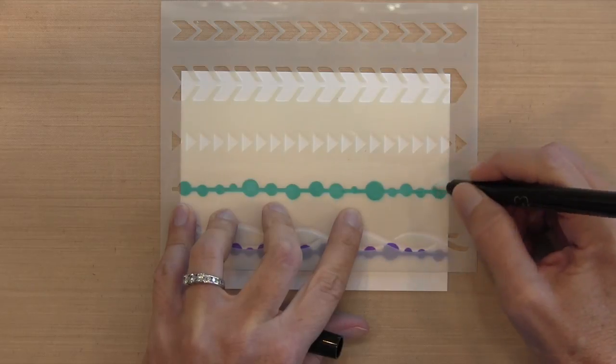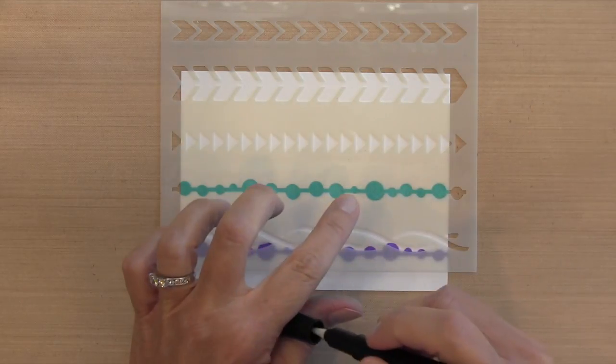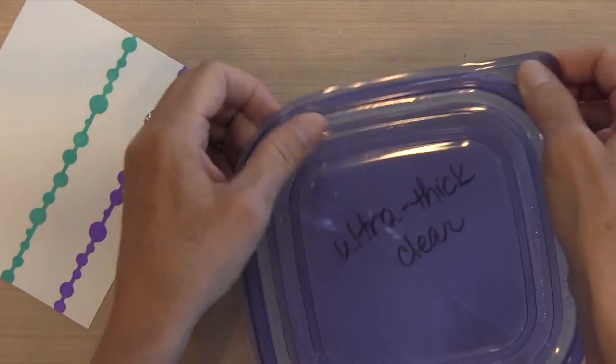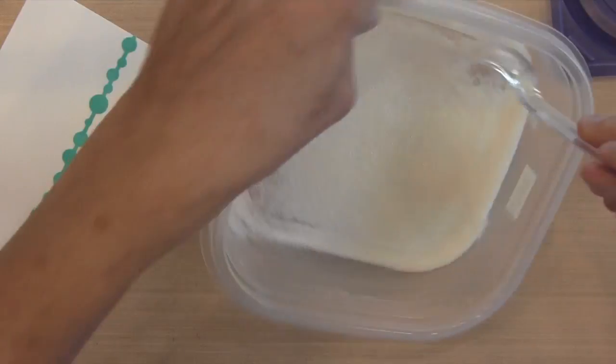You could use your VersaMark ink pad. It just kind of makes a mess with the stencil and that's why I'm using the marker.